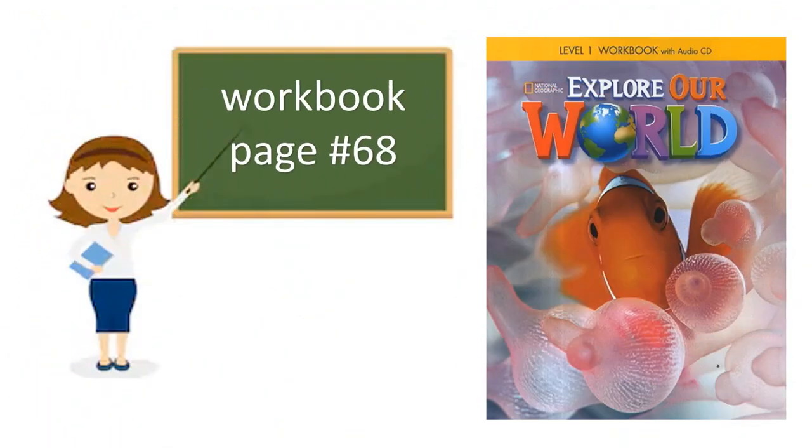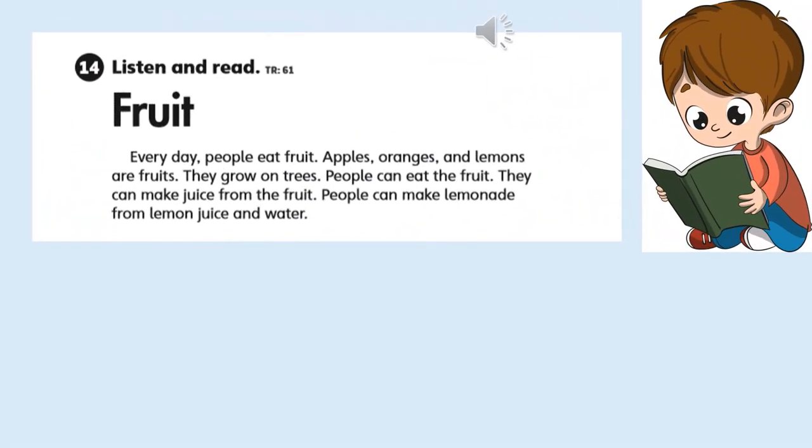Now take out your workbook and open it in page number 68. We have a reading. It says listen and read. Activity 14, listen and read. Fruit. Every day, people eat fruit. Apples, oranges, and lemons are fruits. They grow on trees. People can eat the fruit. They can make juice from the fruit. People can make lemonade from lemon juice and water.